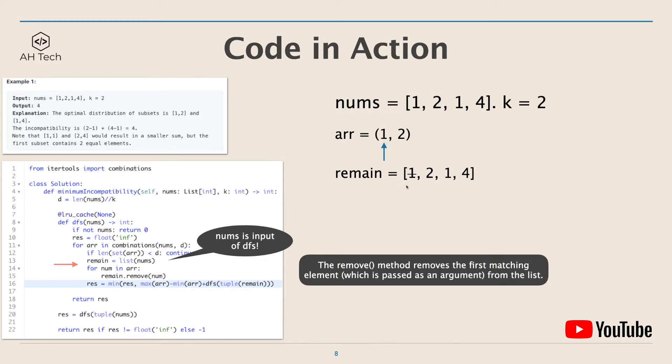In this case, for element 1, only the first one in the remain array will be removed. The same for element 2: the 2 in the remain array will be removed.